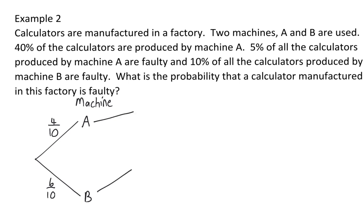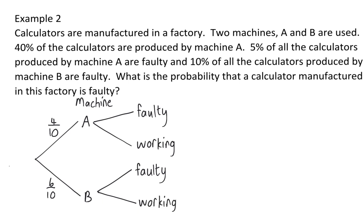The second branch will then be whether these calculators produced are faulty or in a working condition. We were given that five percent of those calculators produced by machine A are faulty, which you could write as five over a hundred, or five percent. For this branch to add up to one probability, there will be ninety-five percent of the calculators manufactured in a working condition. Ten percent of all the calculators produced by machine B are faulty, so here we have ten over a hundred, simplified to one over ten. The rest, ninety percent, will work.